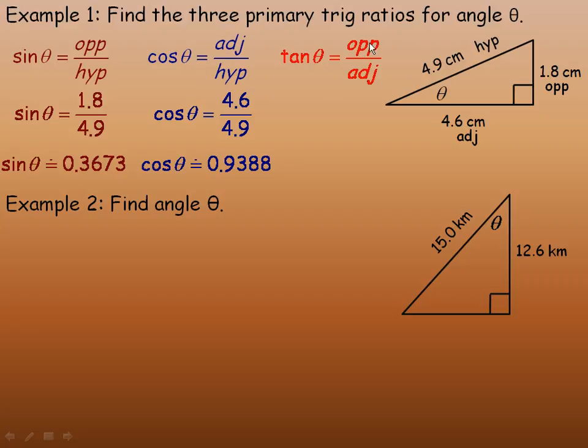The tan ratio is the ratio of the opposite to the adjacent, so we would divide the 1.8 by the 4.6. And so 1.8 divided by 4.6 is approximately 0.3913. So that's the tan of the angle. So that's the three primary trig ratios for this angle.